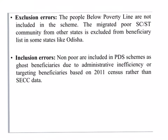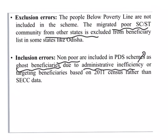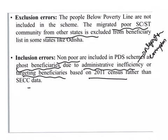For example, exclusion errors occur when people below the poverty line are not included in the scheme — such as migrated SC/ST communities from other states being excluded from the beneficiary list in states like Odisha. Inclusion errors include ghost beneficiaries — those who are not really poor but are included in PDS schemes. Administrative inefficiency, nepotism, and corruption are some reasons for inclusion errors. Another reason is targeting beneficiaries based on the 2011 census rather than SECC data.